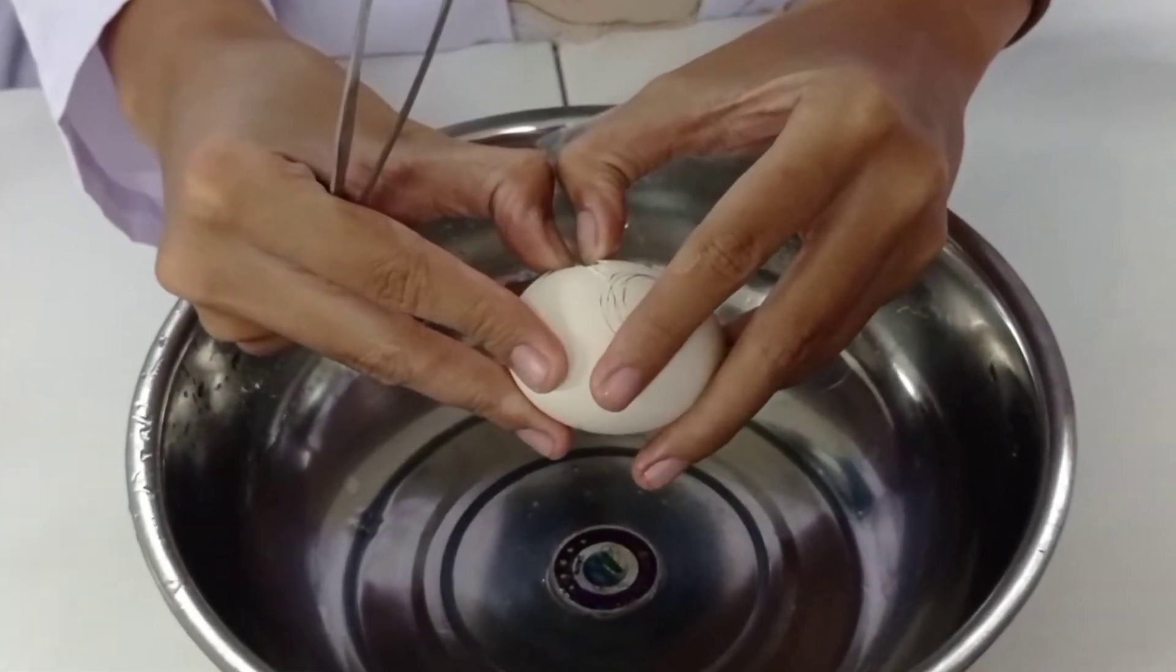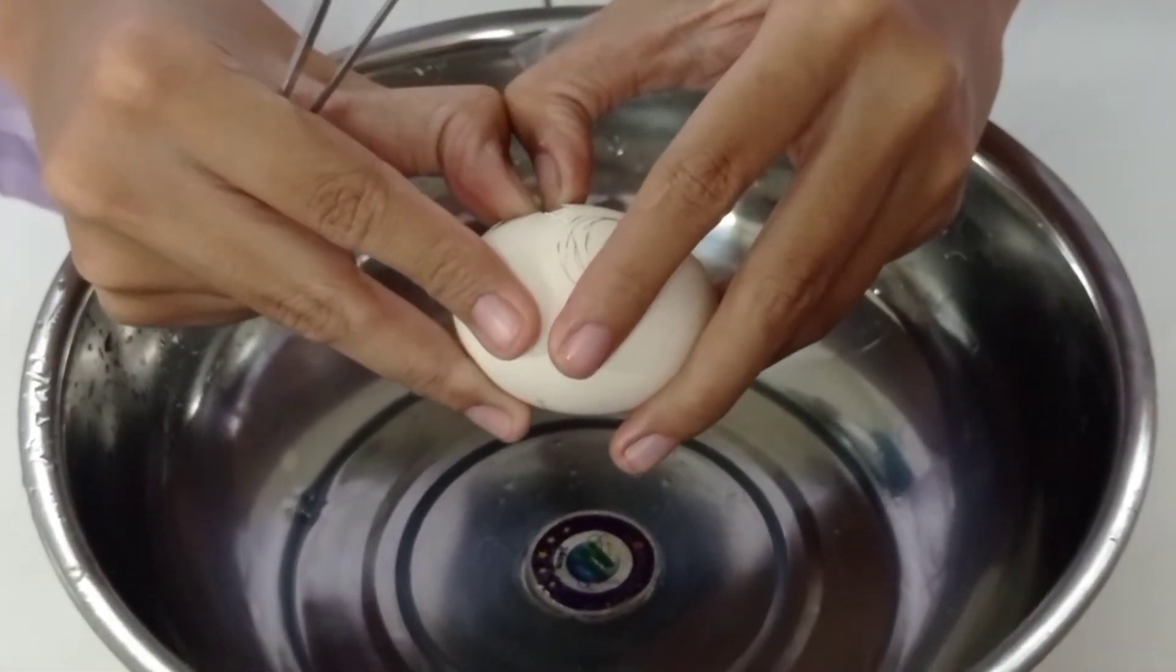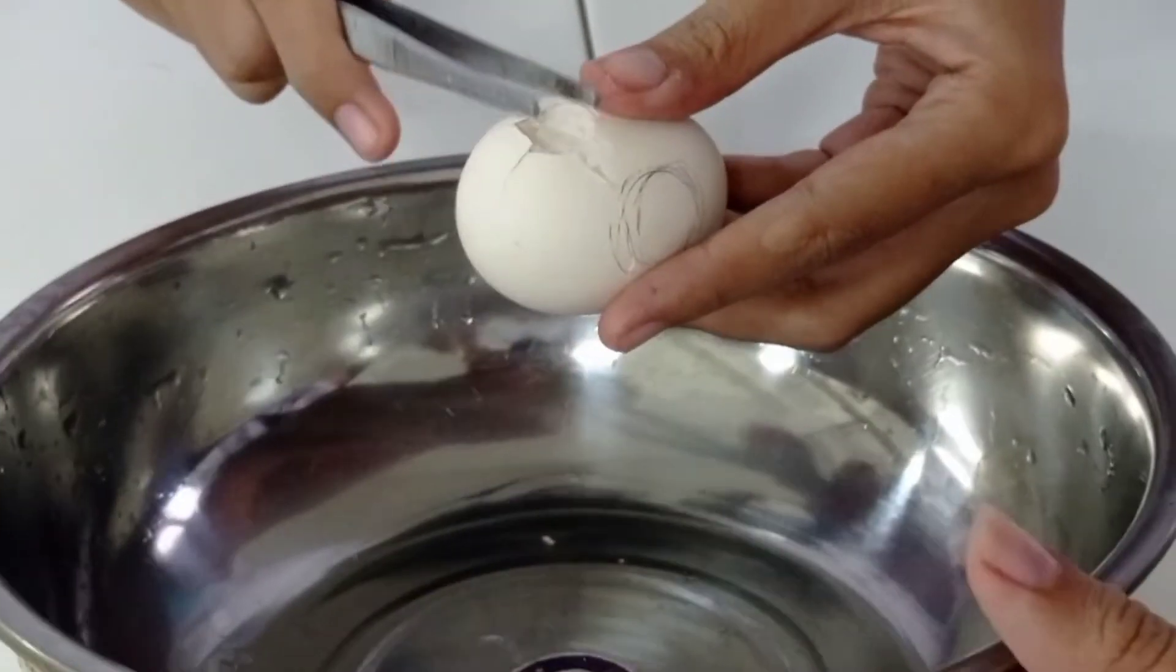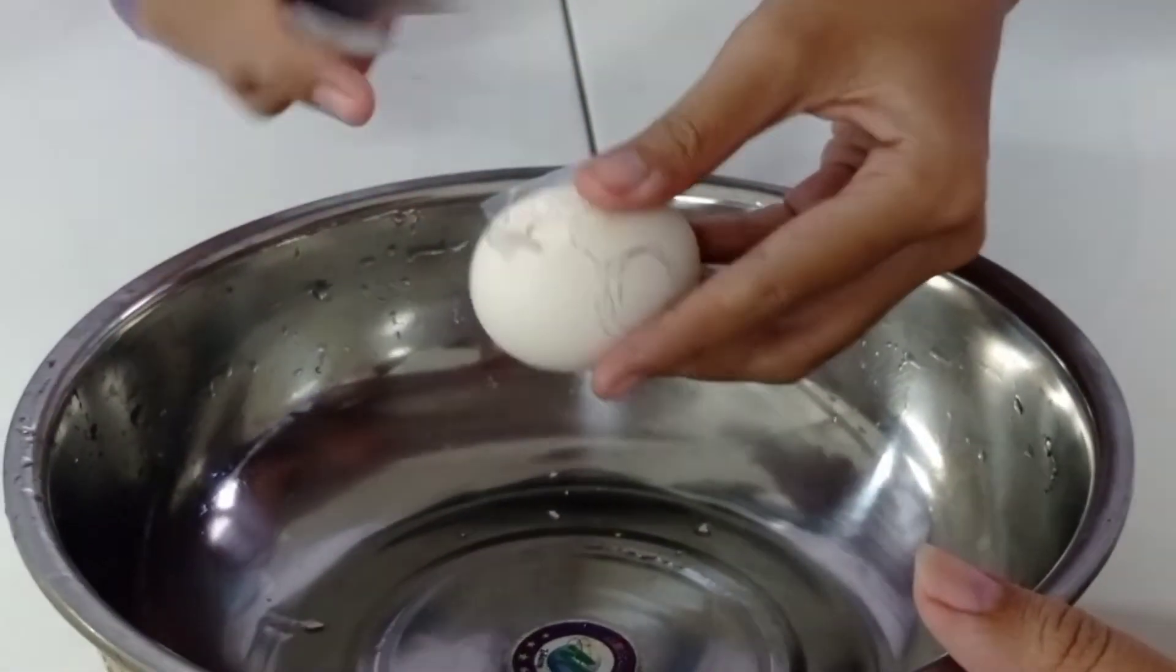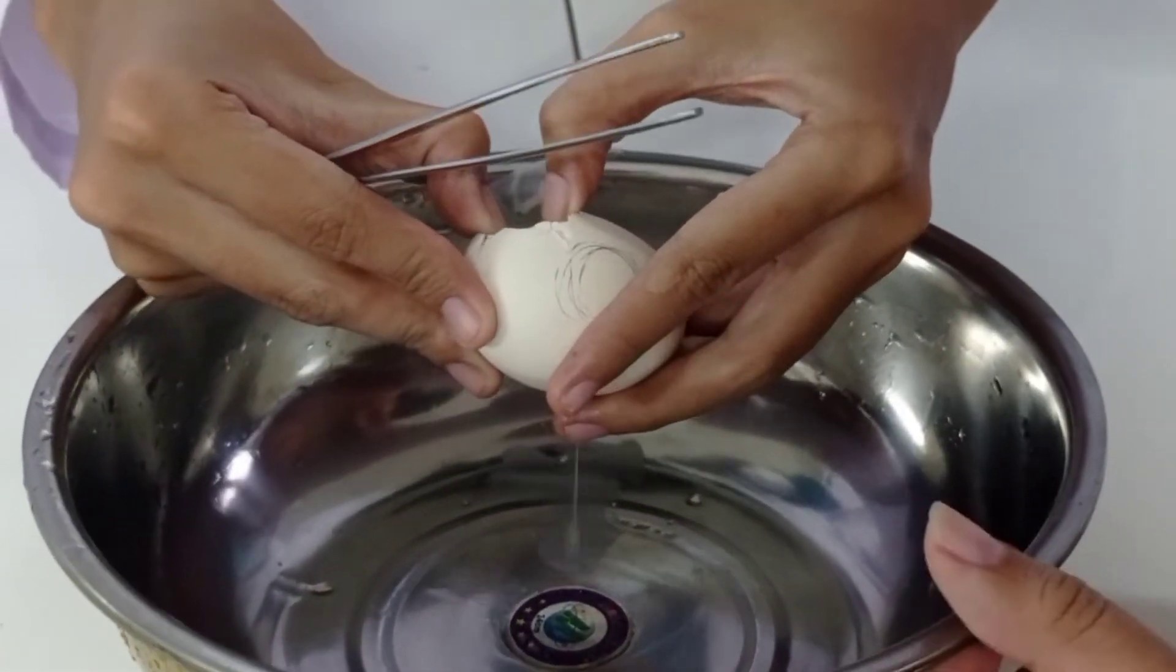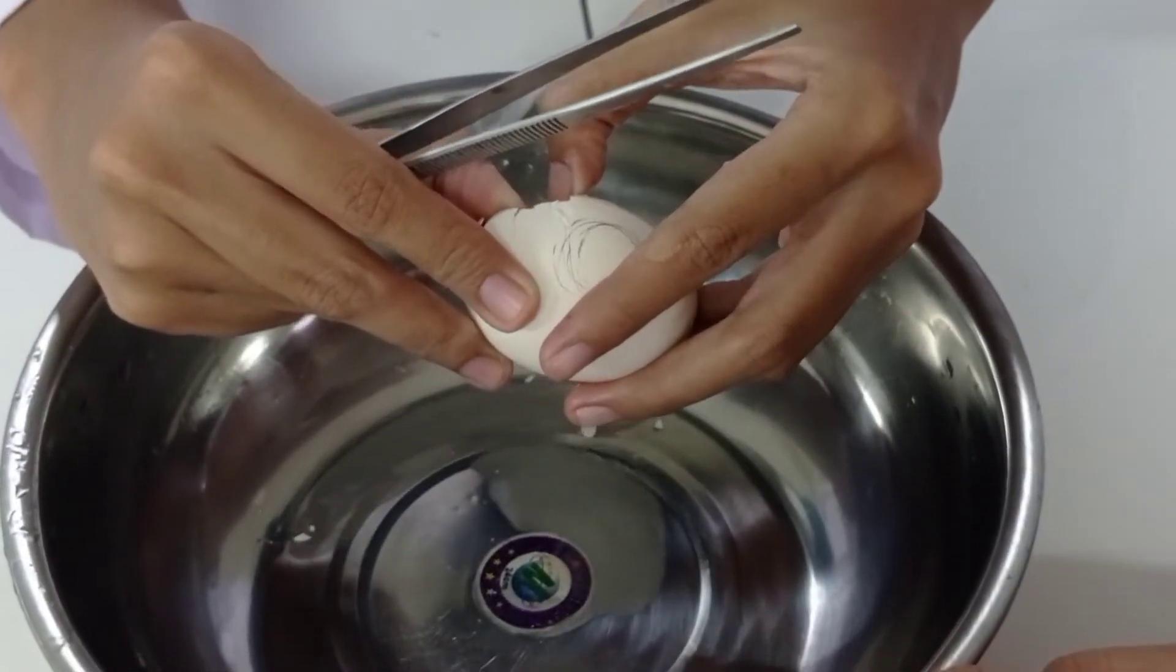Langkah ketiga, yaitu memecahkan telur. Ada dua cara, yaitu dengan cara memecahkan telur seperti menceplok biasa dan langsung dituangkan ke dalam wadah atau baskom.